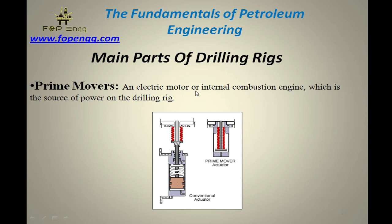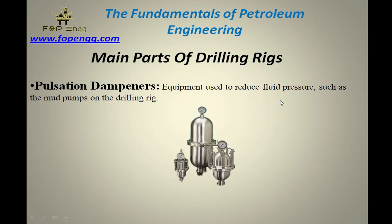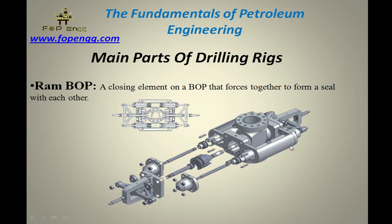Pulsation dampers — equipment used to reduce fluid pressure pulsations such as those from mud pumps. Ram BOP — as mentioned previously, there are three types of BOP: pipe ram, blind ram, and shear ram. The ram BOP is a closing element of the BOP that forces together to form a seal and close the pipe to control the fluid. These rams are used to avoid any kick or blowout at the well site.